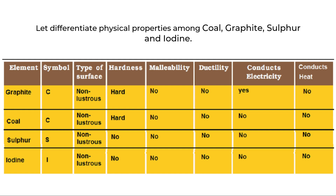Graphite and coal are hard but sulphur and iodine are soft. You may get confused about why graphite and coal have hardness, when hardness is a property of metals — this is a contradiction. We will learn more about contradictions and exceptions shortly. Regarding malleability: graphite, coal, sulphur and iodine do not have malleability. When you hammer them they will break into pieces; they will not bend into sheets. They also have no ductility and cannot be drawn into wires. However, graphite can conduct electricity, whereas coal, sulphur and iodine cannot.